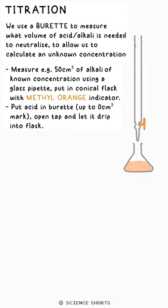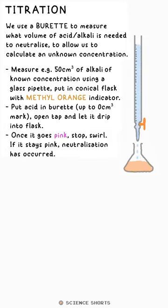We put the acid in a burette above the flask. We open the tap and let it drip into the flask slowly. When it turns pink we close the tap, and if it stays pink after we swirl it, that shows that neutralization has occurred.